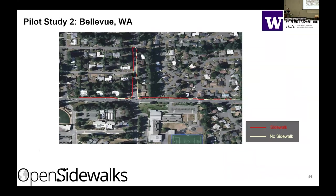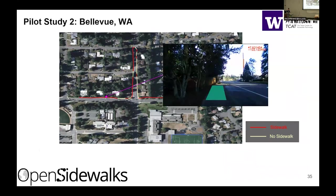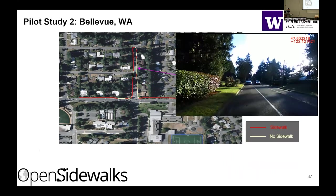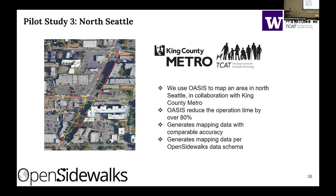Similarly, we have another study done in Bellevue, Washington state, where we can see where there are sidewalks, where there are disconnections, and where there are missing sidewalks. In a case study with County Metro, we used our system to map the same stretch of sidewalks while a paratransit team did the same. We found that our system is able to reduce the operation time by over 80% compared to human surveyor annotation, while generating results with comparable accuracy and a standardized format.